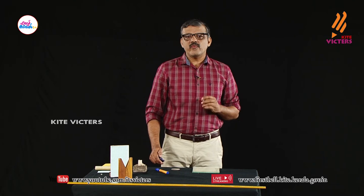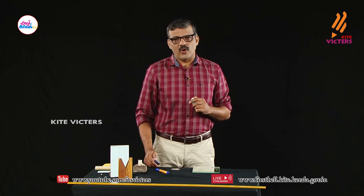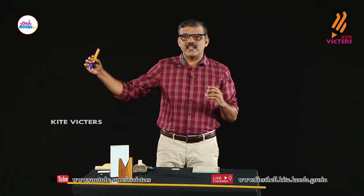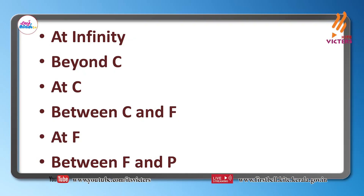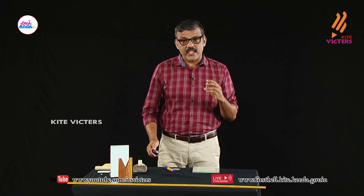When considering the positions of the object, we consider six types of positions: first, object at infinity; second, beyond C; third, at C; fourth, between C and F; fifth, object at F; and finally, between F and P. These are the six positions at which objects can be placed.